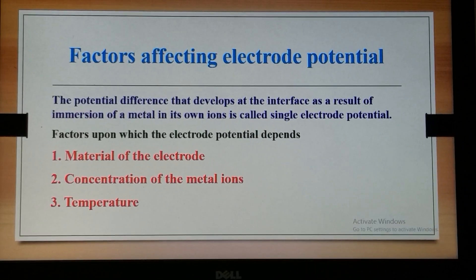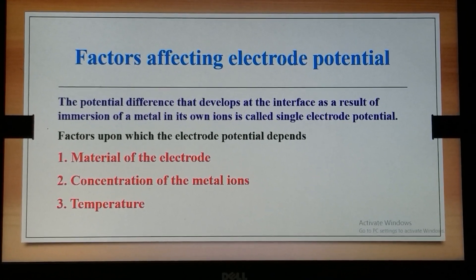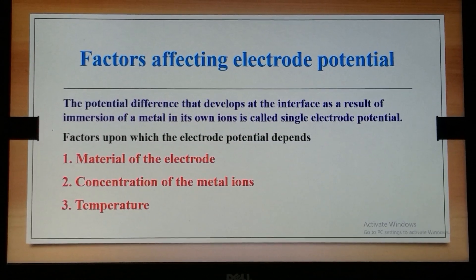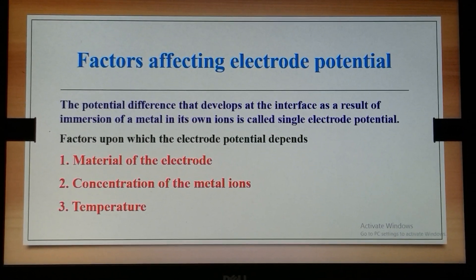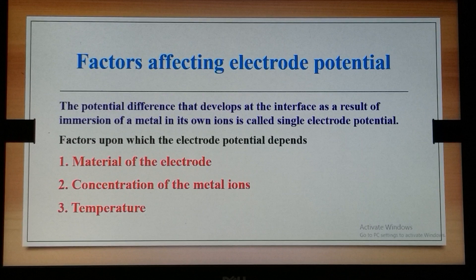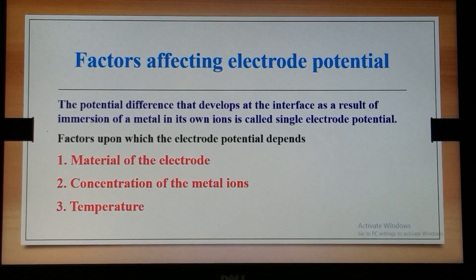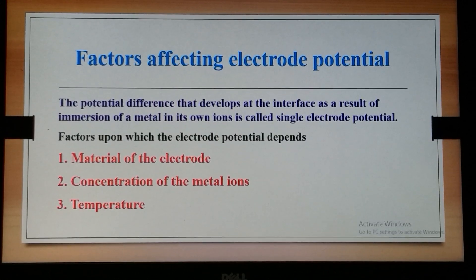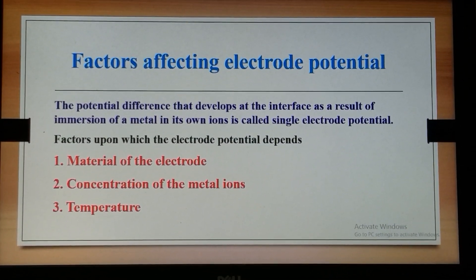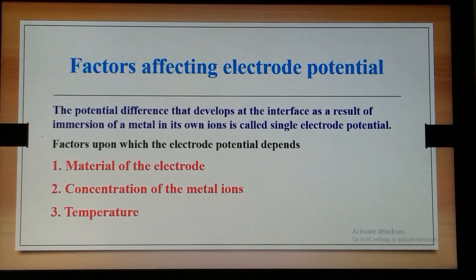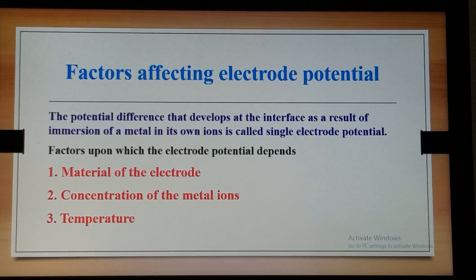Material plays an important role in determining the electrode potential, because a metal which has a higher reduction potential undergoes reduction and can be used as cathodic material, and the one with a lower reduction potential can be used as anodic material.